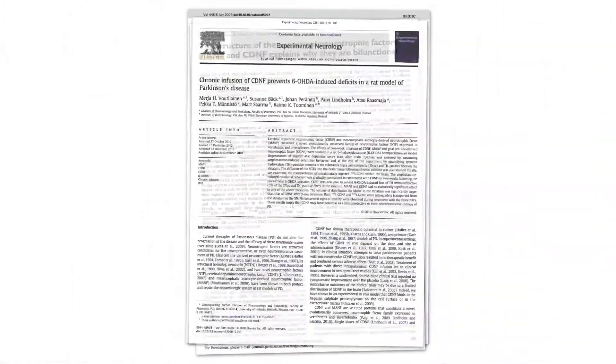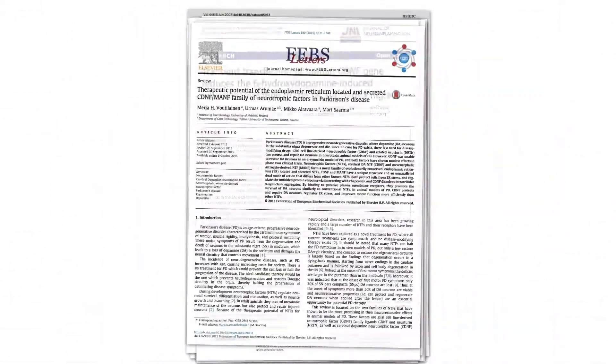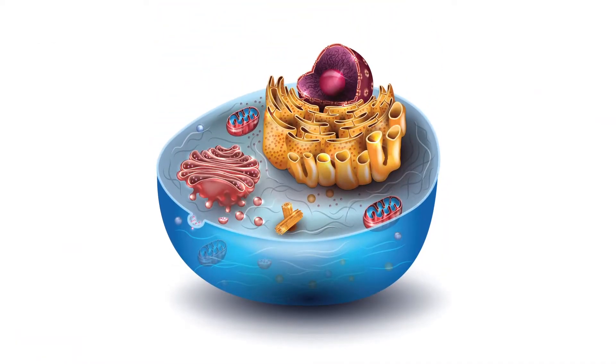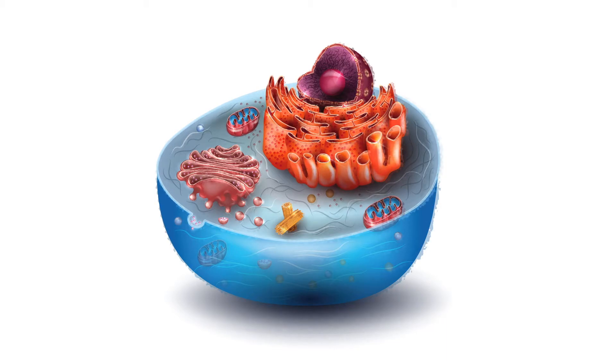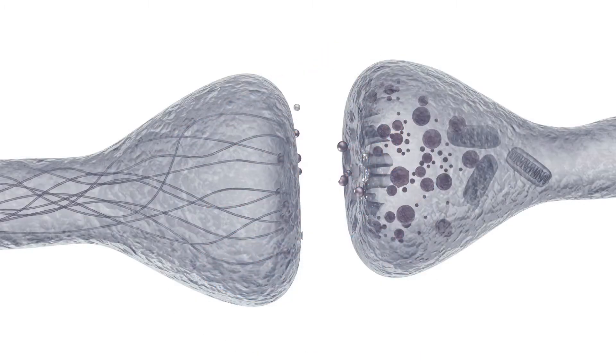Academic studies have shown that CDNF works via multiple mechanisms relevant to Parkinson's. One important feature of CDNF is its ability to protect cells from so-called ER stress. ER stress is a cell-level reaction that adversely affects many central functions of a cell, and therefore prolonged ER stress may eventually trigger cell death. ER stress is central to Parkinson's and many other neurodegenerative diseases. However, when stressed cells receive CDNF, they recover and in the case of dopamine-producing neurons, start producing dopamine again.